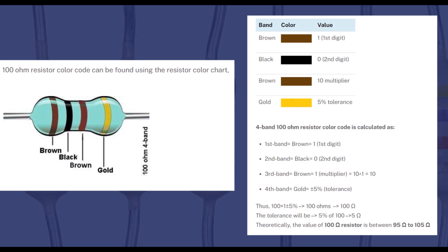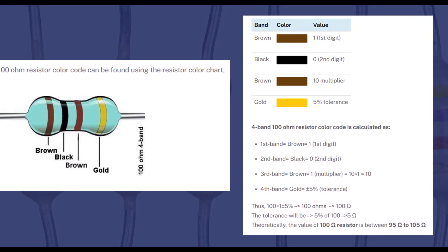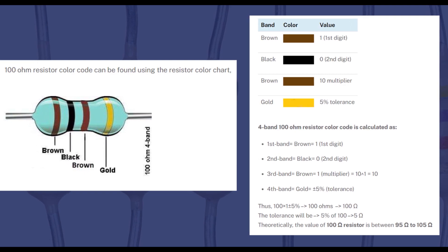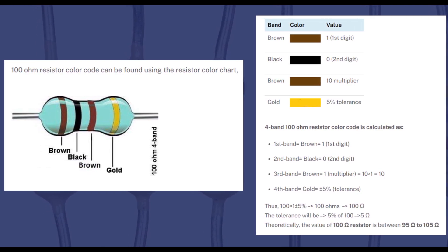Now by using this method you can calculate 4 band 100 ohm resistor. Formula for calculating resistor value and final result you can see on your screen.